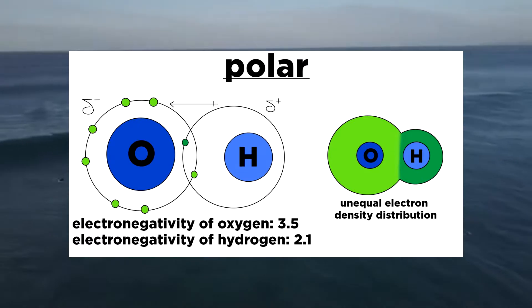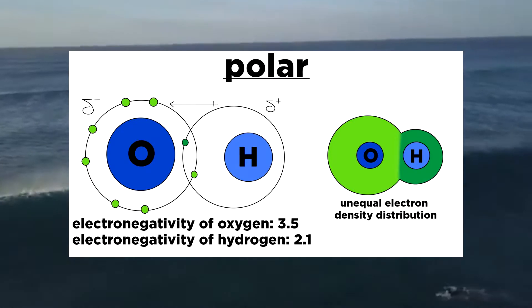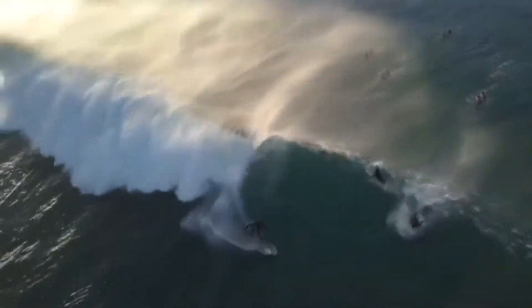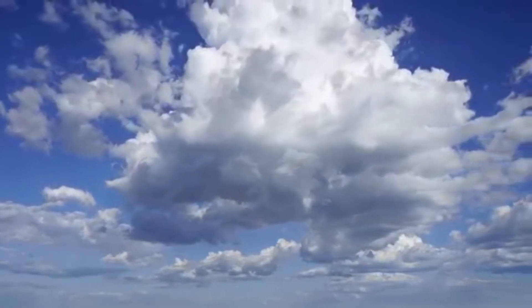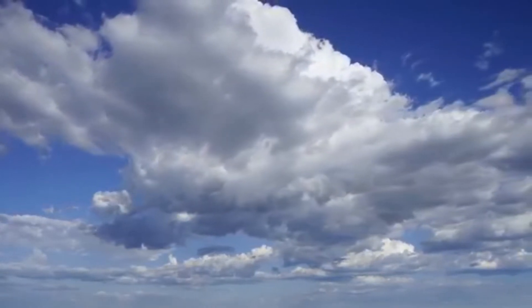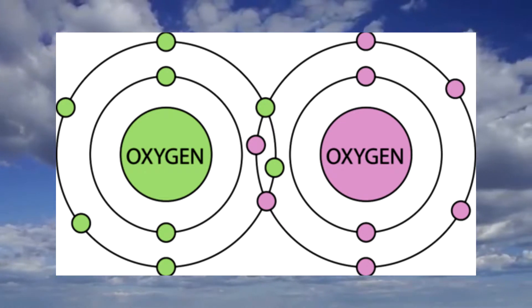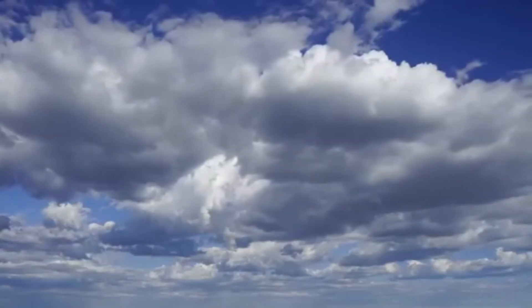An example of a polar covalent bond would be a bond between a hydrogen atom and an oxygen atom — there is an uneven attraction for the shared electrons. In a non-polar covalent bond, the bonded electrons are shared equally by the bonded atoms, which results in a balance of charge. These bonds occur when the difference in electronegativity is less than 0.3. An example would be an oxygen atom bonded to another oxygen atom, where the resulting electronegativity difference is zero and the atoms equally share their bonded electrons.